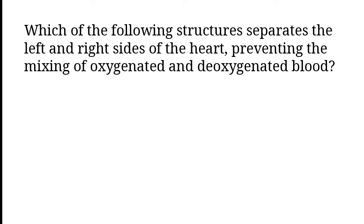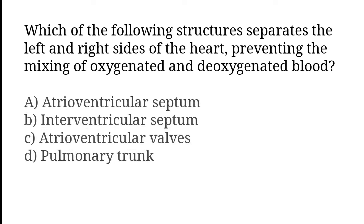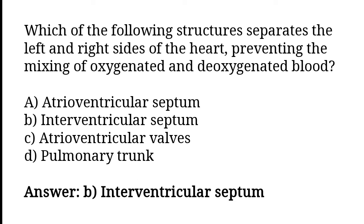Which of the following structures separates the left and right side of the heart, preventing the mixing of oxygenated and deoxygenated blood? Atrioventricular septum, interventricular septum, atrioventricular valves, pulmonary trunk. So the correct answer is option B. Interventricular septum.